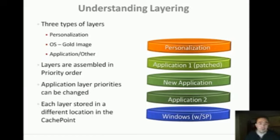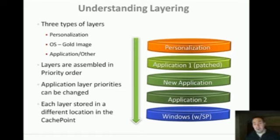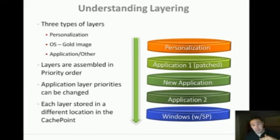These layers, in terms of priority order, are stacked top to bottom — top is highest priority, bottom is lowest. The best analogy I have is imagine a series of clear petri dishes. At the bottom, let's say we have a Windows XP SP3 operating system with IE6. One of your application layers is IE8. If you imagine those dishes are clear and you lay the IE8 layer on top of the OS layer, both sets of files are there, but only the IE8 files are presented because they cover the IE6 files. They stack top to bottom.